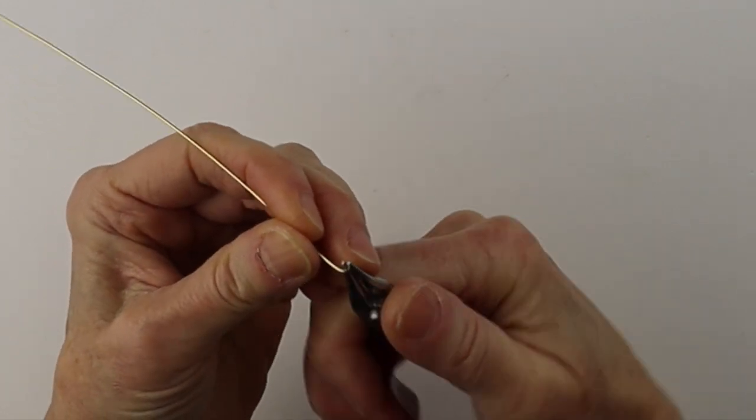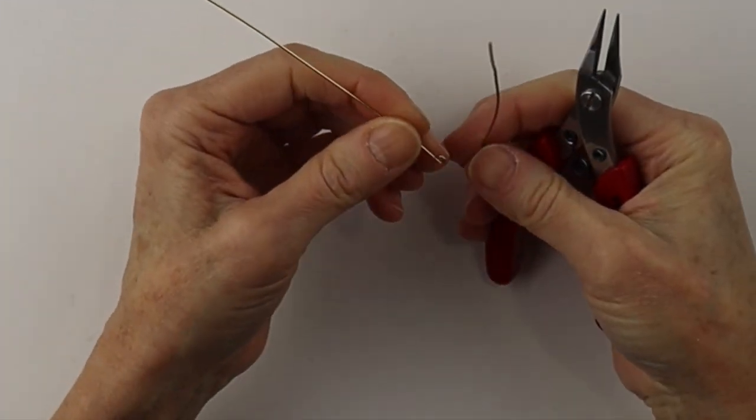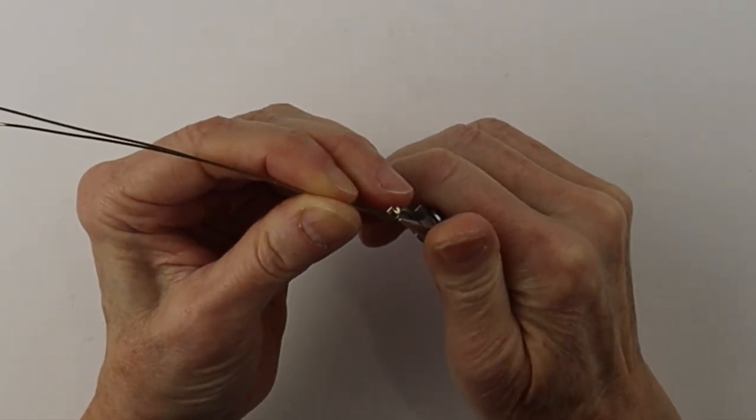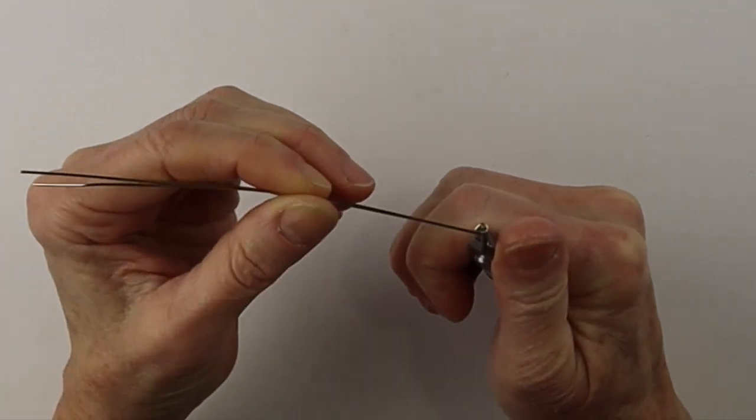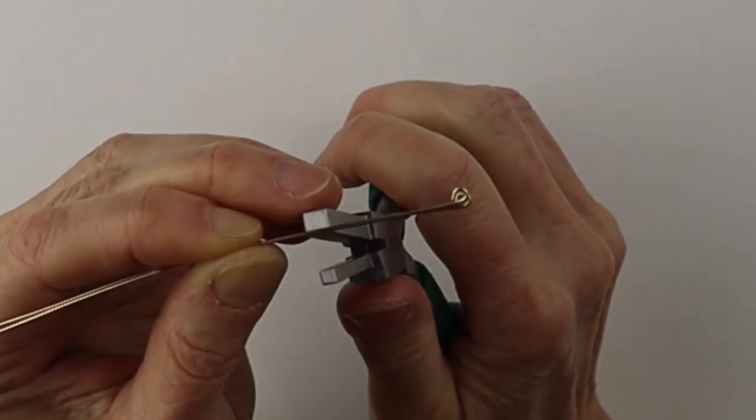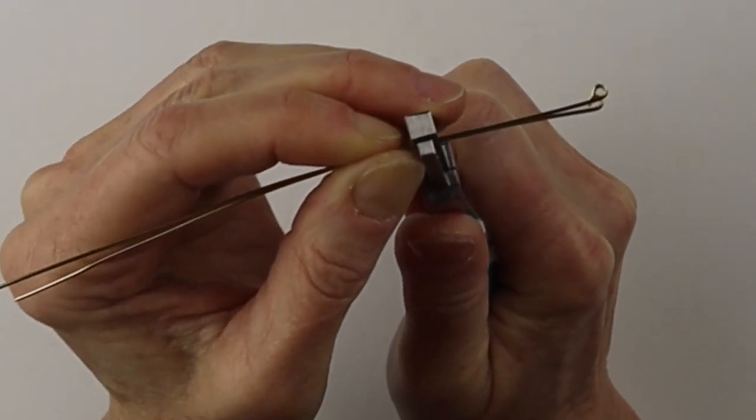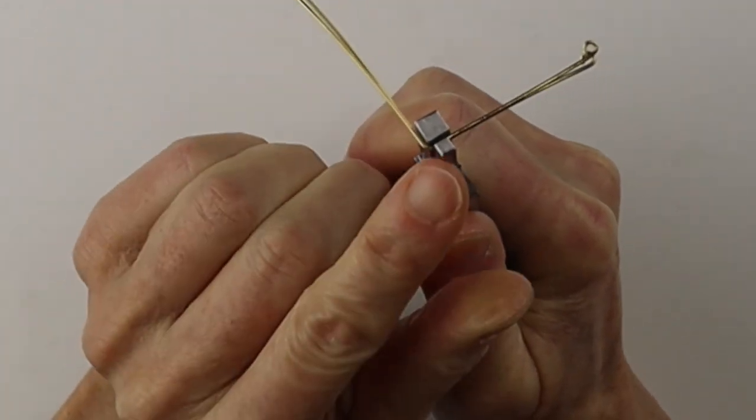We're just going to take that, make one loop, and then the hack I like to use to make earrings the same size - put the two wires together. Then we can get our square mandrel pliers and just hold this snugly and push with your thumb to make a sharp bend.